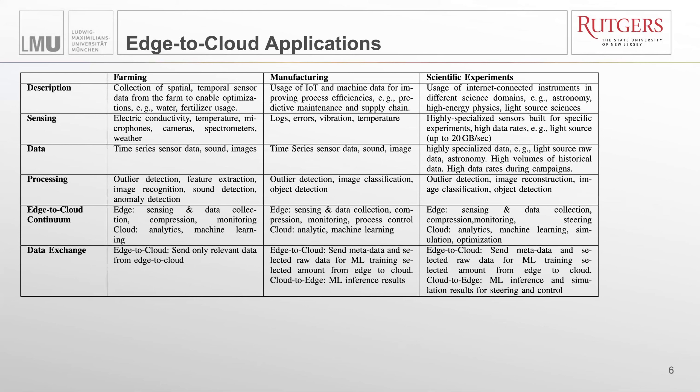The third and most demanding scenarios are scientific experiments, like light sources, but also astronomy or high-energy physics. Here we see very high data rates and also very high data volumes, with highly specialized and very high-end sensors. Scientific experiments are clearly the most demanding of the three scenarios. They also share the commonality that data is commonly moved from the edge to the cloud and handled across the stages of data processing.